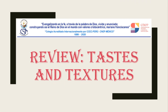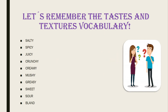Okay guys, let's start with our lesson for today. Now we have a review about taste and texture vocabulary that we have already learned. For example, we have: salty, spicy, juicy, crunchy, creamy, mushy, bland, sweet, sour.